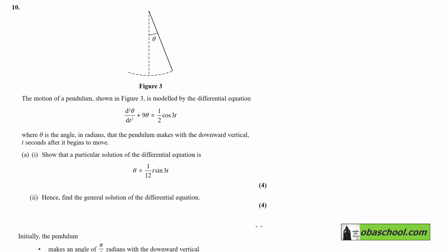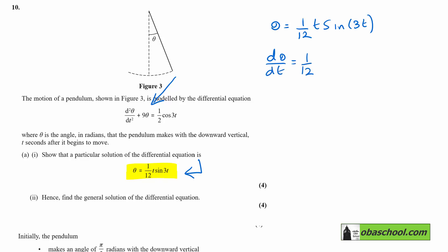Show that a particular solution of the differential equation is θ = (1/12)t·sin(3t). All we need to do is substitute this into the equation to show that it works. So we have θ = (1/12)t·sin(3t). Since that is a product, we differentiate: dθ/dt = (1/12)[sin(3t) + t · 3cos(3t)].